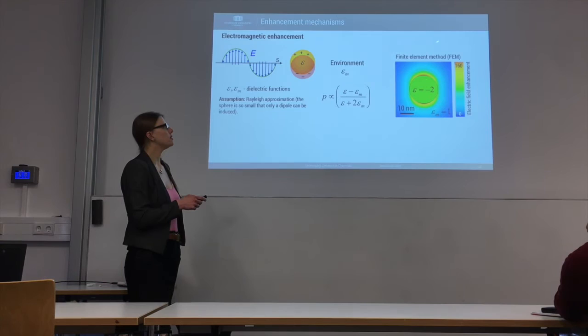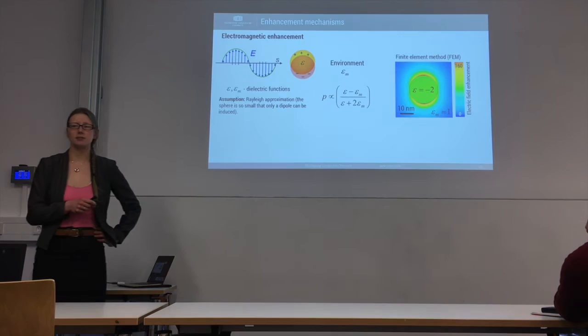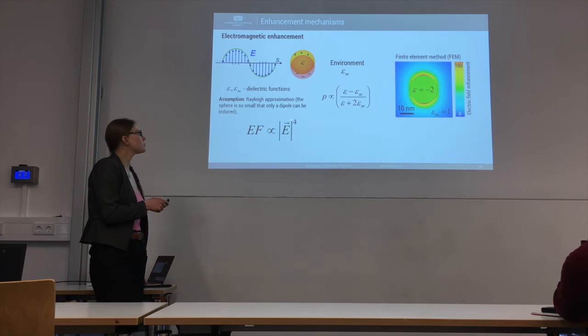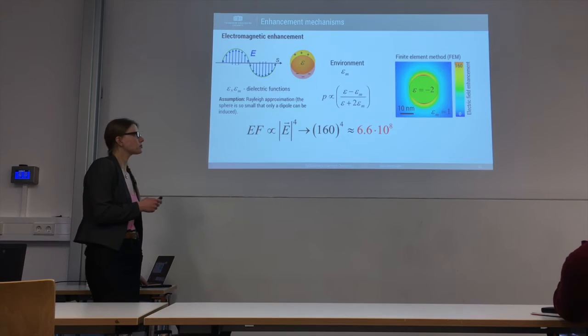In this example, obtained by Finite-Difference Time-Domain method simulations, the enhancement is 160 times. If we were to use it to enhance the Raman signal — which, as you remember, is also light — we would enhance it by the electric field enhancement to the power of four. For this case of 160 times field enhancement, that's 10 to the power of 8 signal enhancement. A huge number.